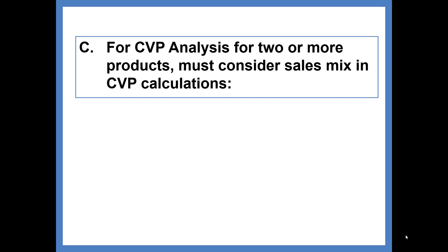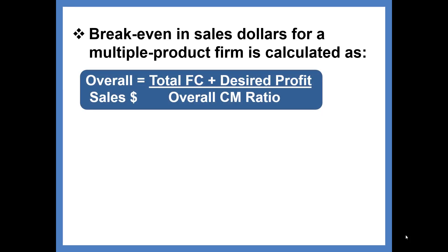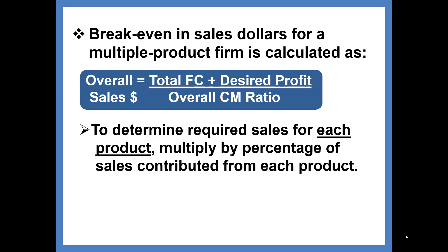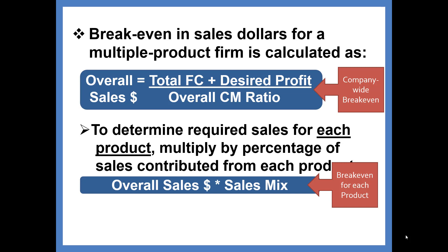We will typically use the contribution margin ratio method when we have multiple-product companies. Our break-even point in overall sales dollars equals total fixed cost plus desired profit divided by the overall contribution margin ratio. When I say overall sales or overall contribution margin ratio, I mean the company-wide amounts, not the amount for any one segment. Then we can find the break-even by product line by multiplying by the sales mix — it's a two-step process: first get the company-wide break-even point, then calculate break-even for each product line.